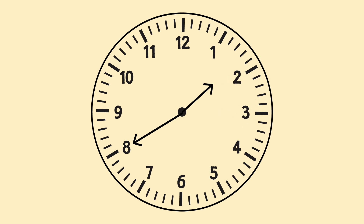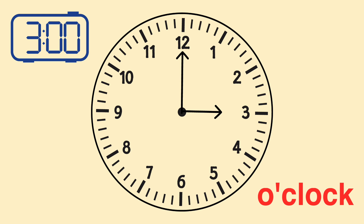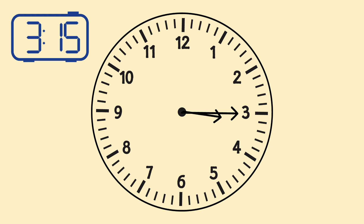We count by fives for each number: 5, 10, 15, 20, 25, 30, 35, 40, 45, 50, 55. The 12 gives us 60, but when the minute hand points to the 12 it becomes a new hour — an o'clock. Take a look at some examples: 3:15, 8:55, 4 o'clock.